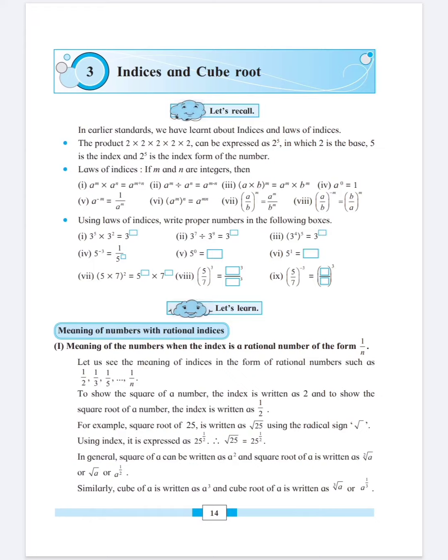For example, if I ask you to find out a cube of 4. So, 4 multiplied by 4 multiplied by 4 will give you 64.